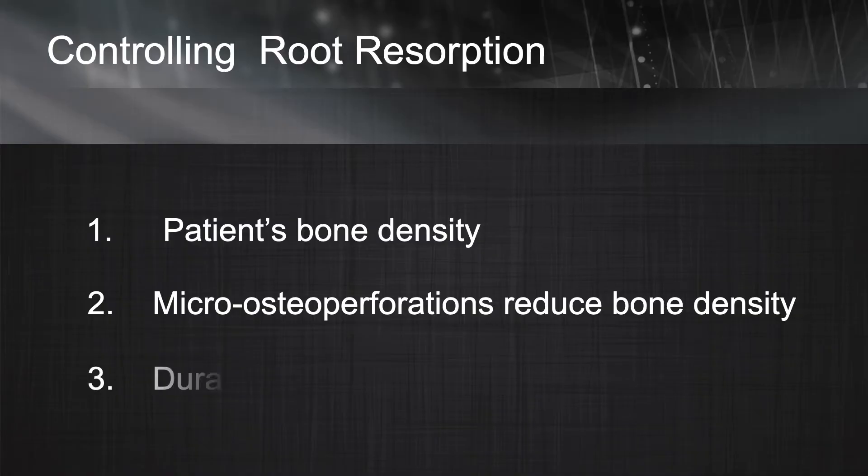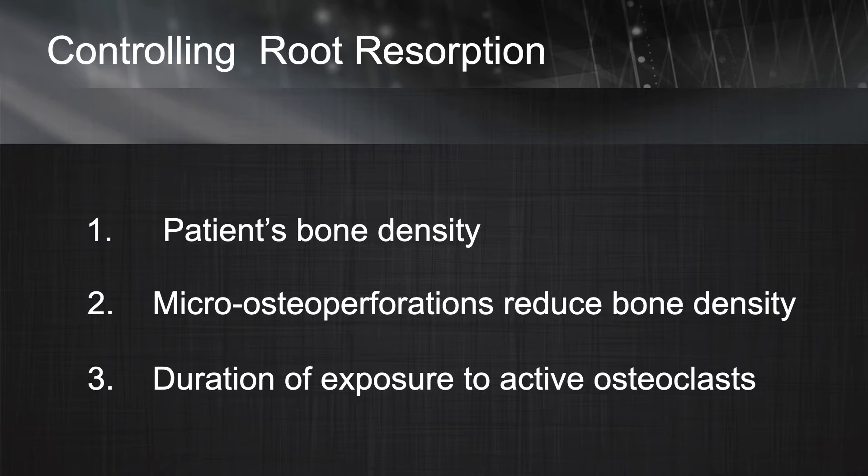One may ask: if the number of osteoclasts goes up in the area, should the magnitude of root resorption go up, not down? But as discussed in the introduction, it is not the number of osteoclasts that matters. Research shows that how long the osteoclasts stay inside the area is the most important factor. By increasing the rate of tooth movement and bone remodeling, you do not allow the osteoclasts to sit stationary on the surface of the root in the form of odontoclasts and cause significant root resorption. In summary, not the number of osteoclasts, but how long they sit stationary on the area is the main factor that contributes to root resorption.